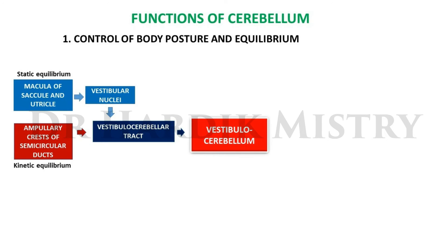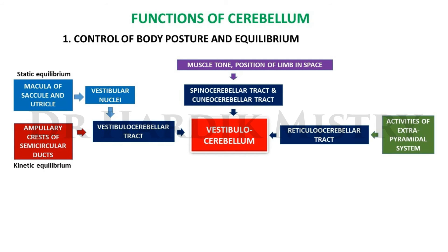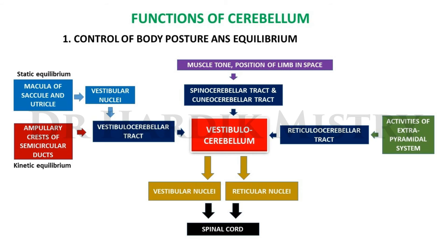The vestibulocerebellum controls body posture and equilibrium. Its afferents include the vestibulocerebellar tract, which conveys static equilibrium from the macula of the saccule and utricle via vestibular nuclei, and kinetic equilibrium from the ampullary crest of semicircular ducts. The spinocerebellar and cuneocerebellar tracts carry information on muscle tone and limb position, while the reticulocerebellar tract brings feedback about extrapyramidal system activity.